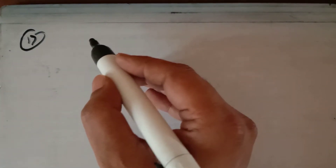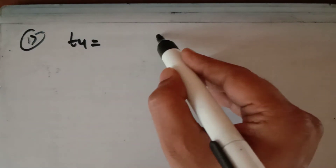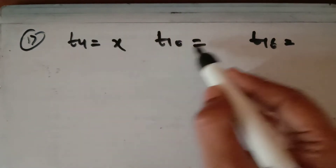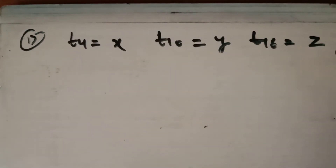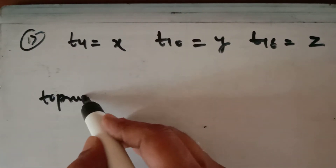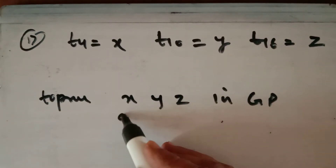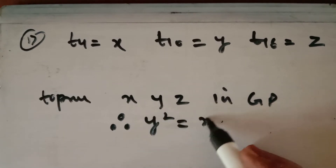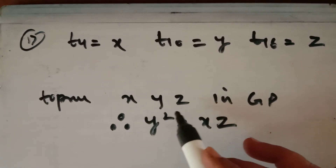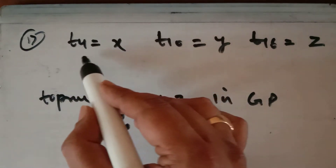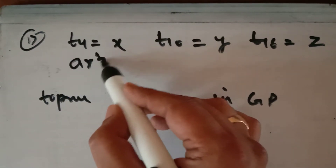In question number 17, the fourth term, tenth term and sixteenth term of a GP are given as x, y and z respectively. We have to prove that x, y, z are in GP, meaning we must show that y² equals x·z. If the fourth term is x, then a·r³ = x.